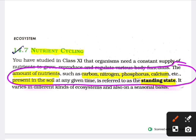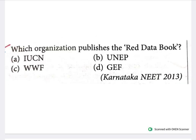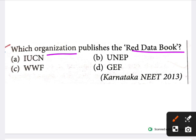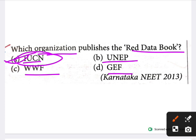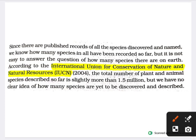Next question: which organization publishes the Red Data Book? Options are IUCN, UNEP, GEF, and WWF. The answer is IUCN — the International Union for Conservation of Nature and Natural Resources.